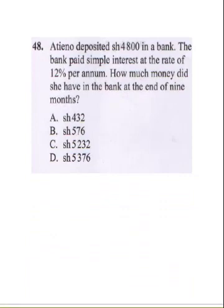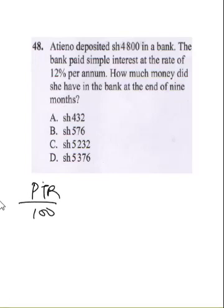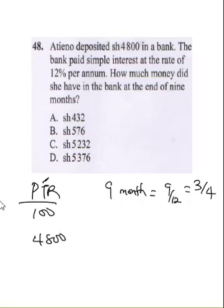I tell you, she deposited 4,800 in the bank. The bank paid simple interest at the rate of 12% per annum. How much money did she have in the bank at the end of 9 months? The formula for simple interest is PTR over 100, where the time is in years. Since we are given 9 months, we need to convert: 9 months is 9 over 12, which gives us 3 over 4. So this will be principal 4,800 multiplied by time 3 over 4, times rate 12, all divided by 100.